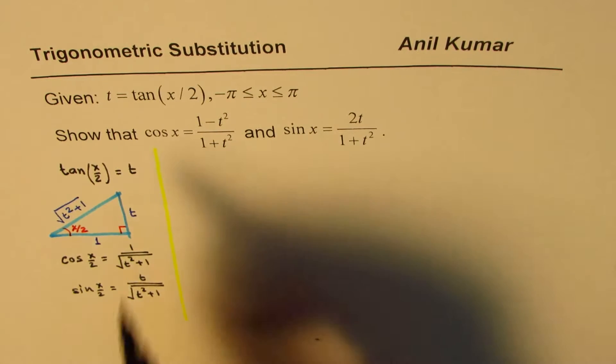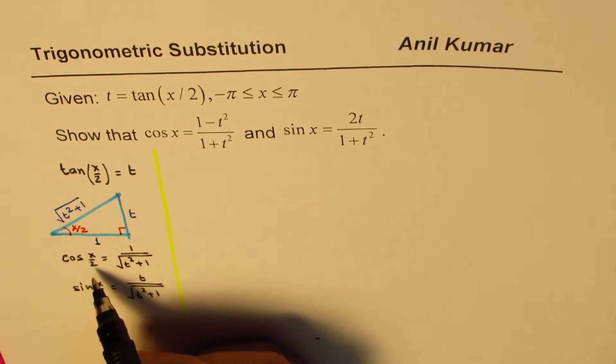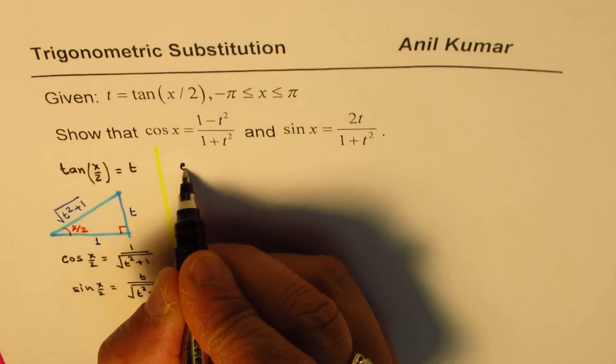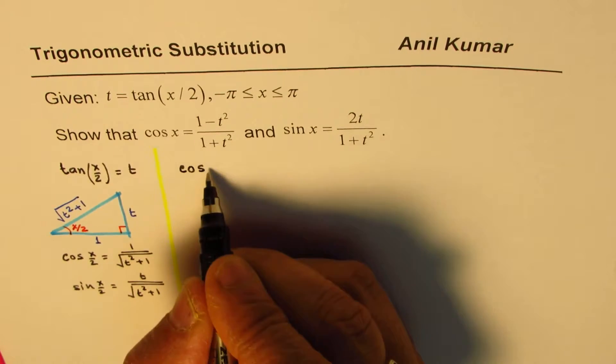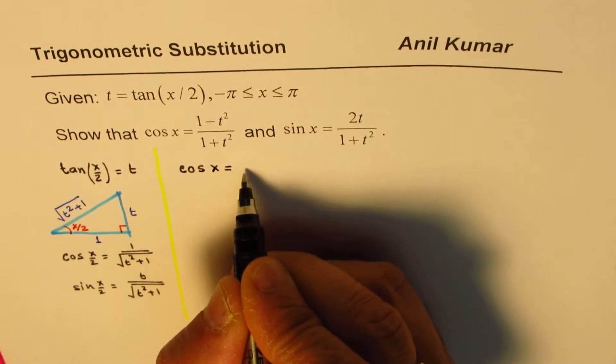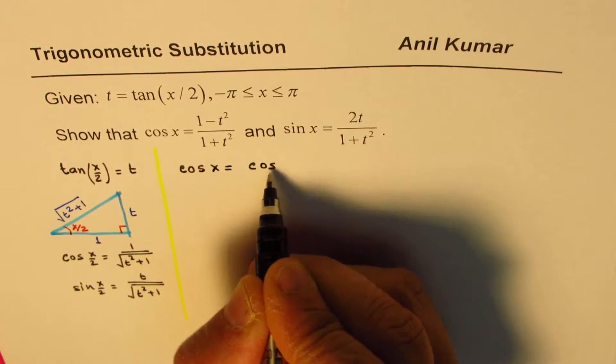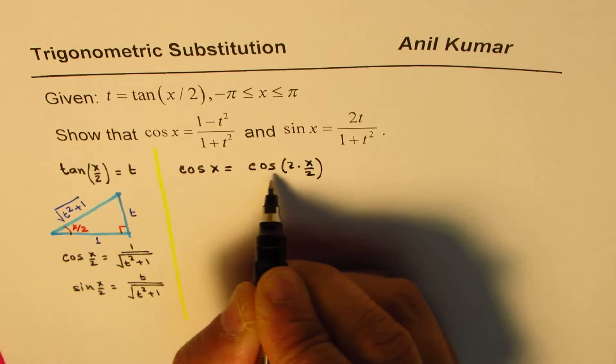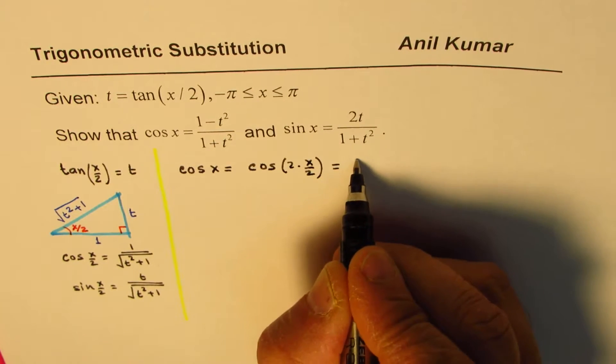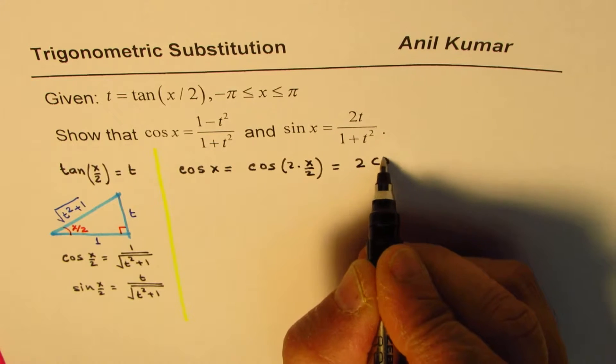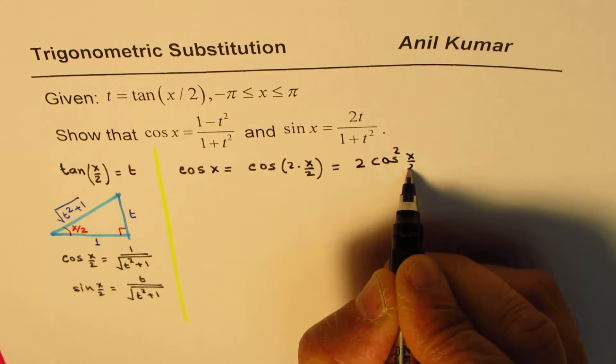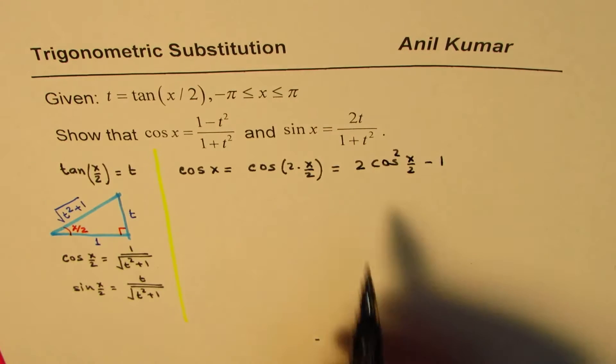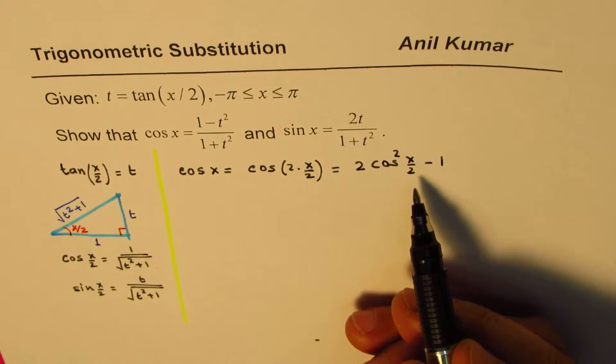Now the idea is to get the value of cos x. Now cos x is 2 times this. So we could think like this. Cos x equals cos of 2 times x/2. So that is the cos 2x formula, which could be written as 2 cos²(x/2) minus 1. So that is a standard formula which you can use.